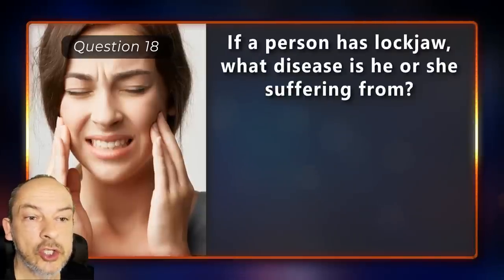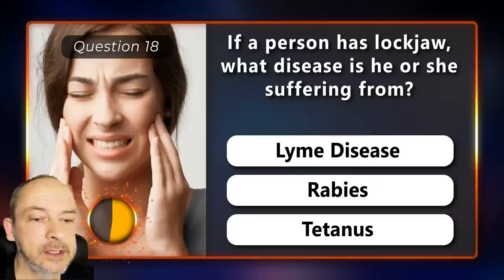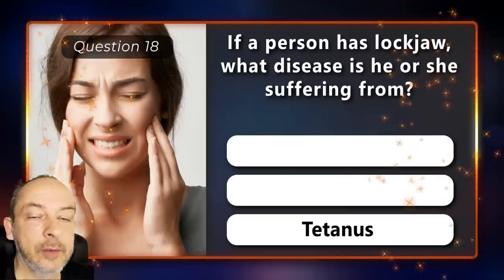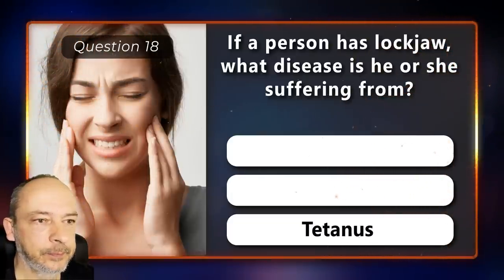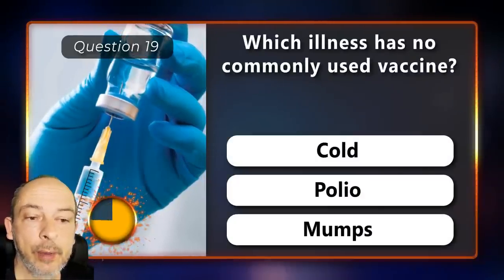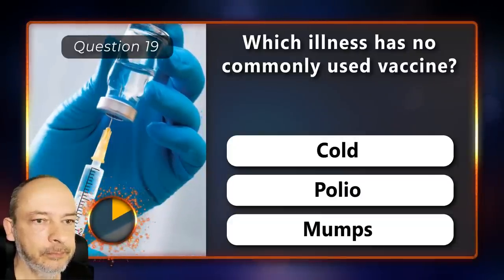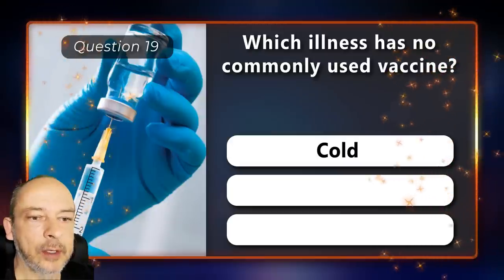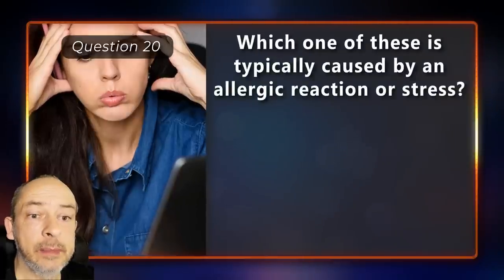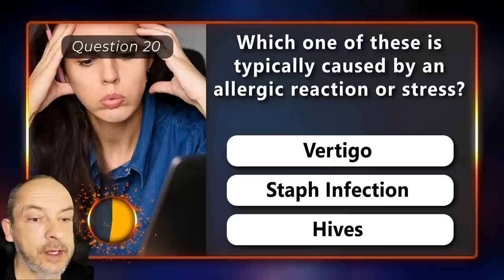If a person has locked jaw, what disease are they suffering from — Lyme disease, rabies, or tetanus? Which illness has no commonly used vaccine — cold, polio, or mumps? Which one of these is typically caused by an allergic reaction or stress — vertigo, staph infection, or hives?